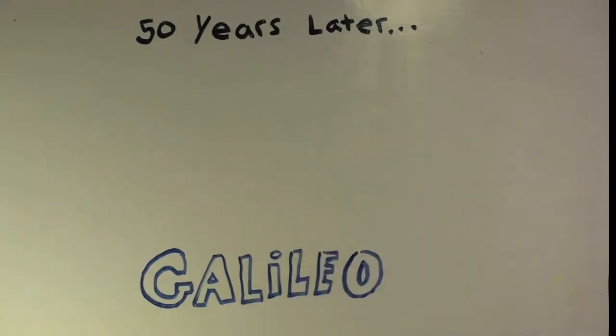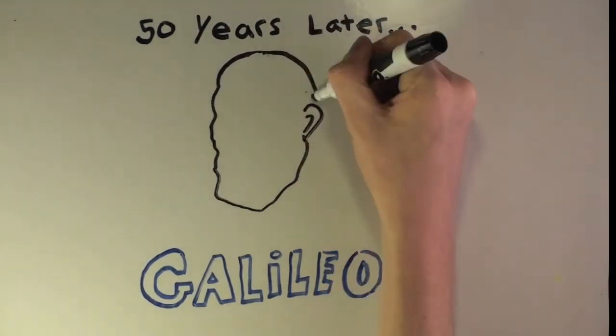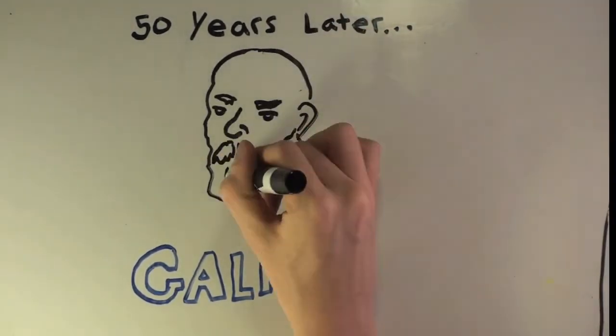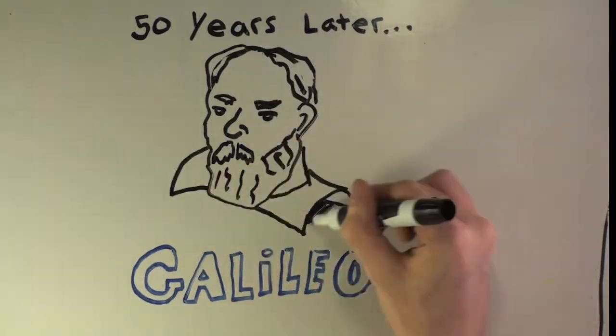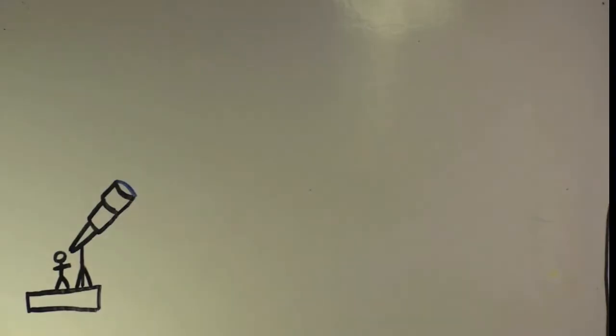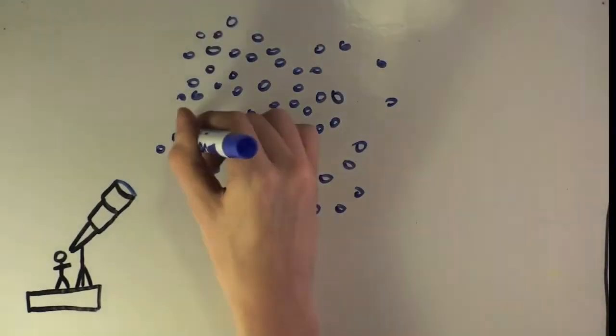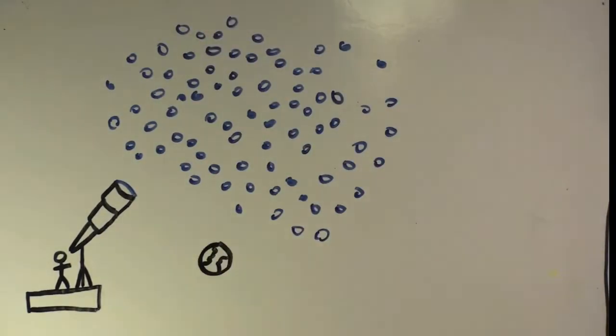A half-century later, an Italian astronomer by the name of Galileo Galilei built a telescope and used it to prove Copernicus' original heliocentric model. But first, with the power of his telescope, he was able to see thousands more stars than was possible with the naked eye.